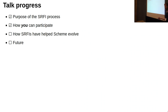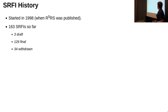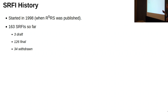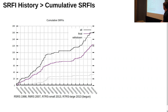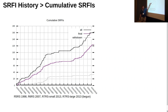Now a quick overview of the history of how SRFIs helped Scheme evolve. The SRFI process is quite old — 20 years old. We have 163 SRFIs: right now three are in draft, 126 are final, and 34 have been withdrawn (though that number is a little inflated). You can see a history over time — the zero mark is around when R5RS came out; in 2007, R6RS came out; and around 2013 when R7RS came out, we had a big increase in the number of SRFIs.